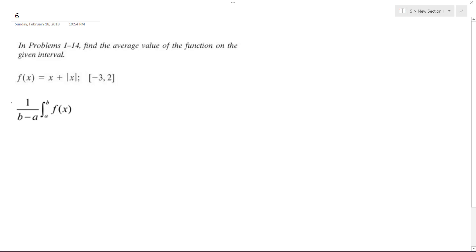So starting off here, setting up the equation, it's going to be 1 over 2 minus negative 3, which is going to be equal to 1 over 5 for our component over here.